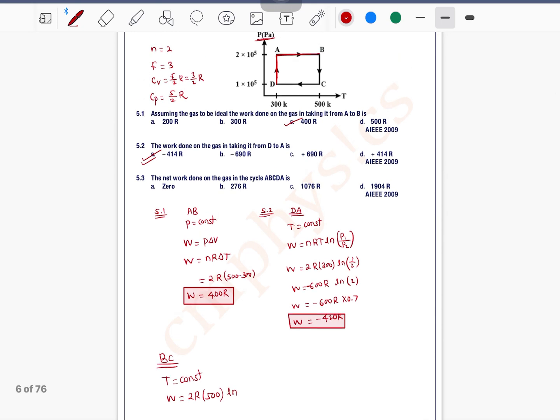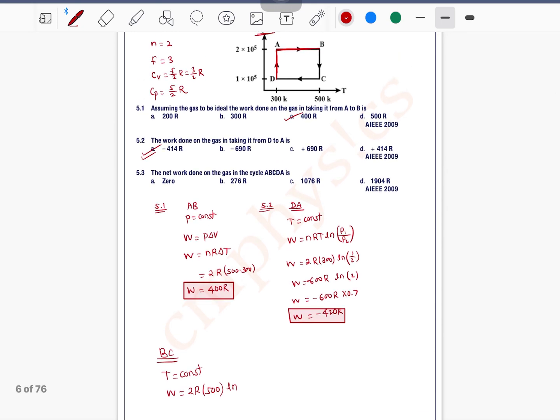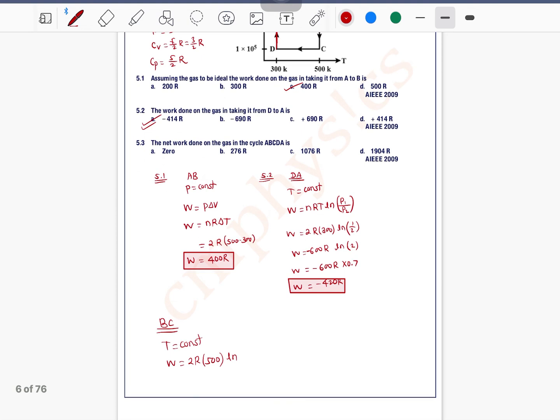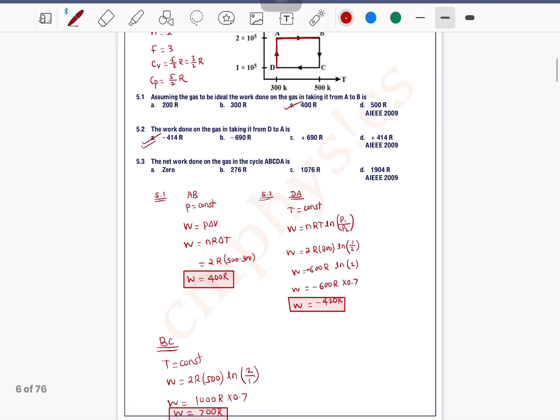is 500, ln of—final pressure is how much? Initial pressure is 2, final is 1, so 2/1. So this work equals 1000R·ln(2). 1000R times 0.7 means W equals 700R.